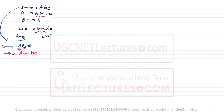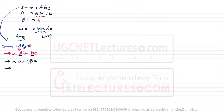Now I can replace the next right most symbol. There are two variables A and B; I replace the right most A again with b, giving aabbcBe. Now we have only one variable B, which we replace with d, giving us abbcde. That completes the right most derivation.